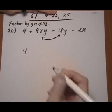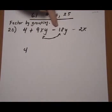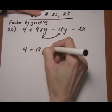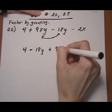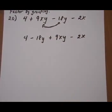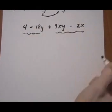So rewriting, we get 4, and when we move the 18y, and this is true for any term that you move over, the sign before it goes with it. So we get minus 18y plus 9xy minus 2x. And now we're going to try to factor by grouping. So group the first two together and the last two together.